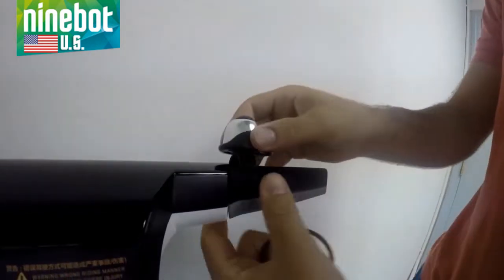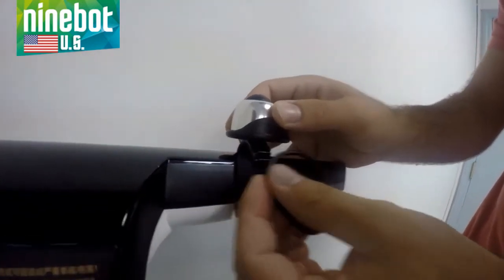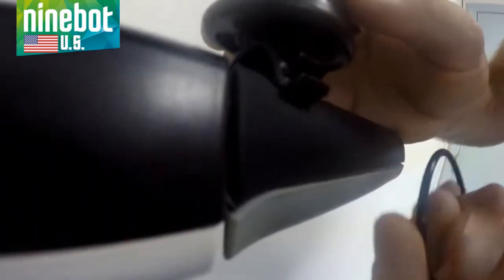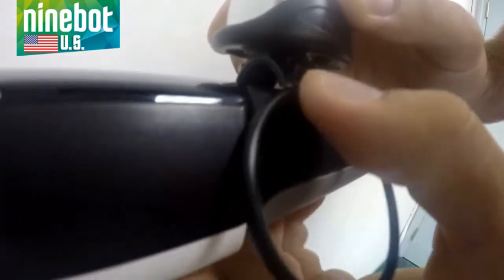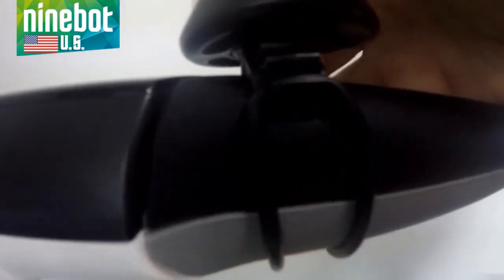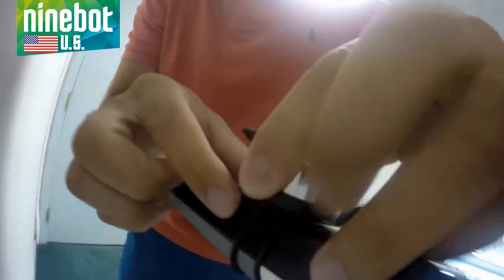And it's pretty simple. We're just gonna place our bell around the handlebar, put it into the lowest notch here, wrap your rubber band around, and secure it on the other side in the same notch right there.